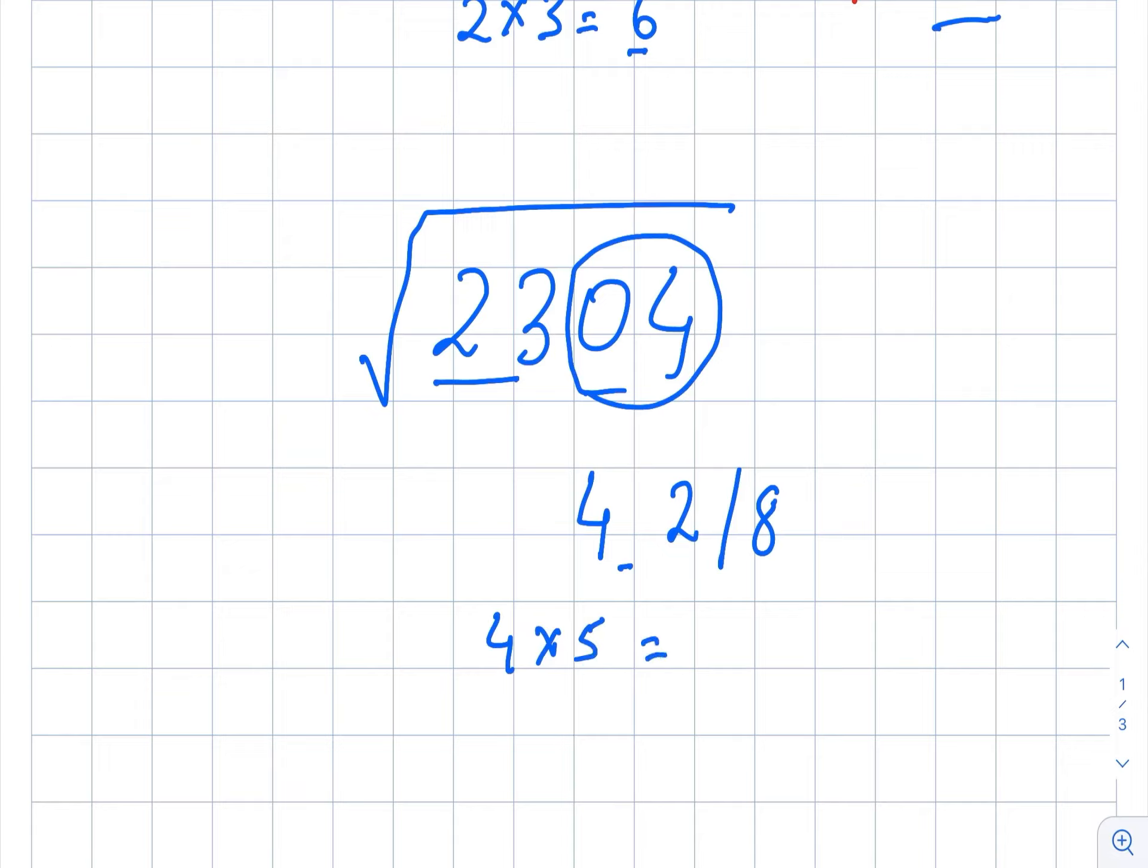Here 23 is bigger than 20, so we will pick the bigger number, 8. So the square root of 2304 is 48. Isn't it a very simple and easy trick for perfect squares? If you like this video, give a thumbs up and subscribe to my channel for more such videos. Thanks for watching.